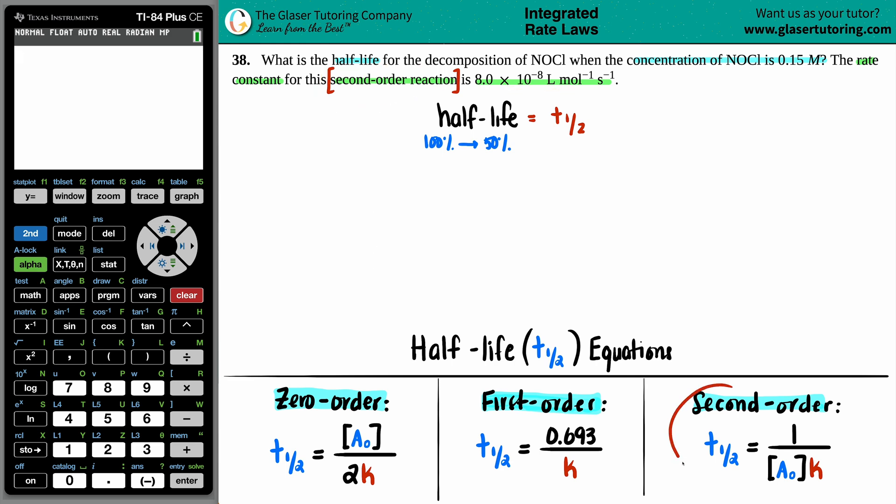So I'm going to come over here, and I know I have to use this formula. The half-life, T half, is one divided by the concentration times K. So I'm going to pull this one up.